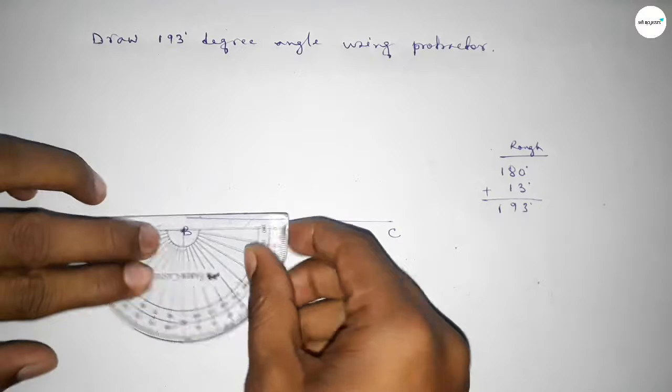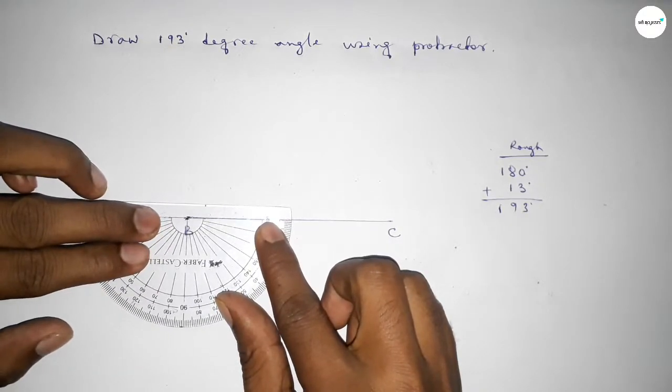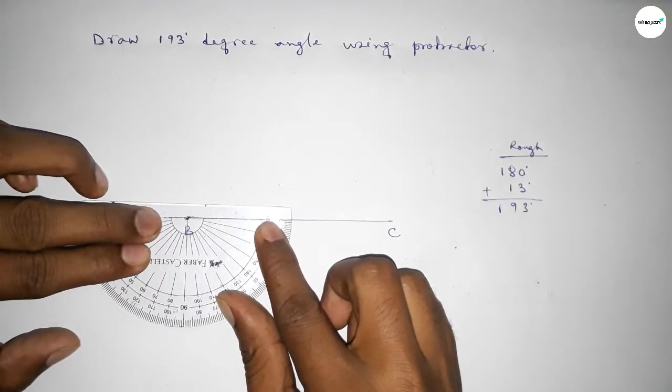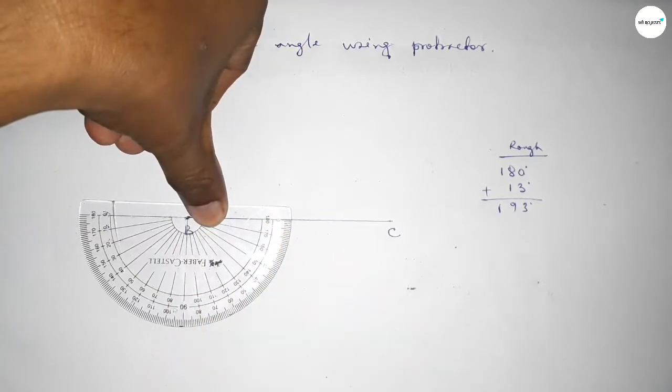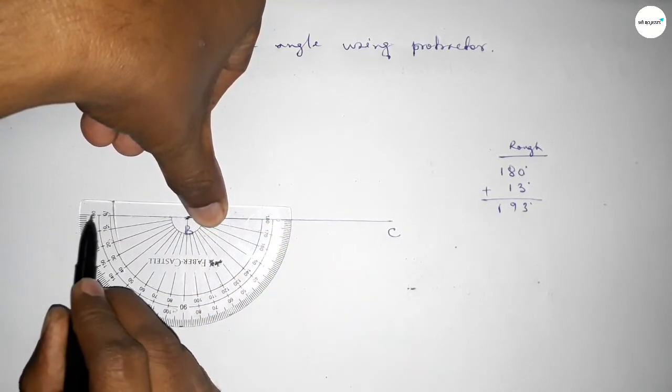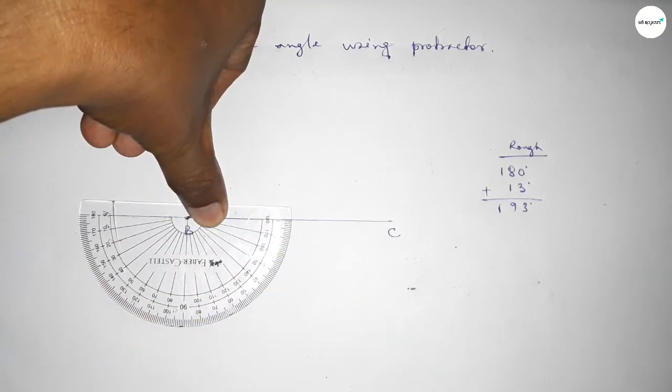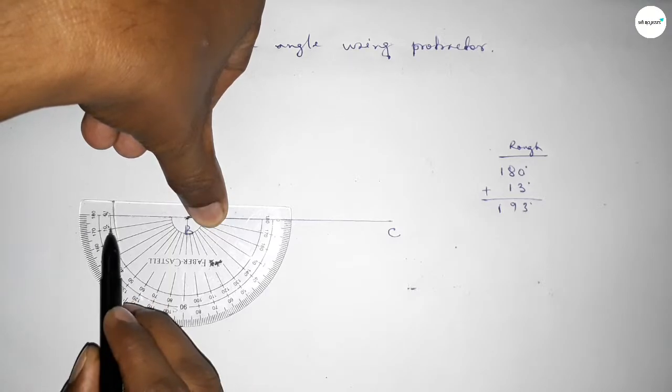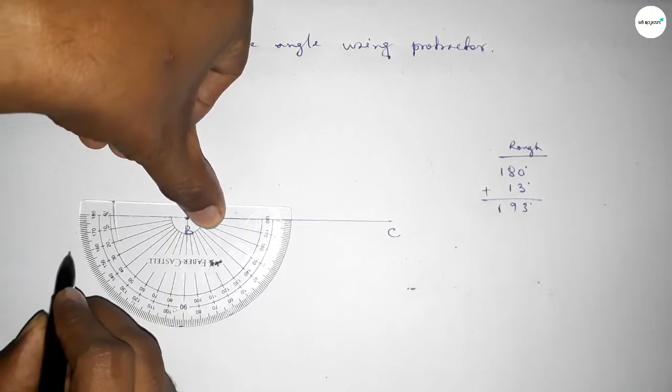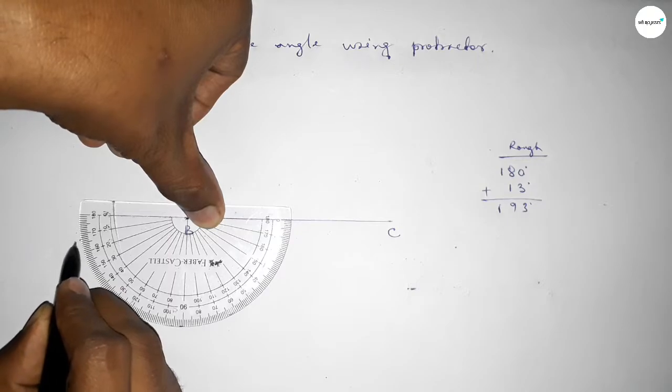Again putting the protractor on point B this way, and we have to count 13 degree angle. So this is starting at 180 degrees and this is 0, 10, 11, 12, 13.